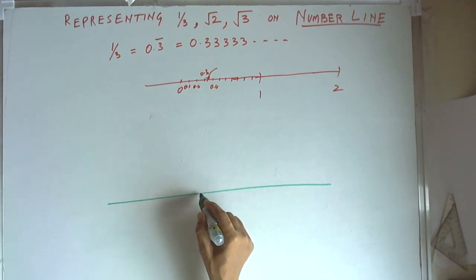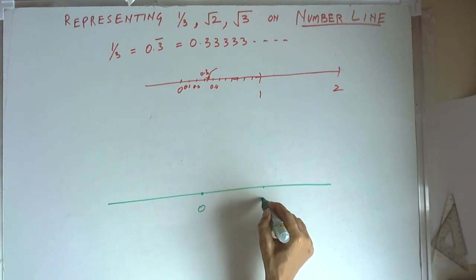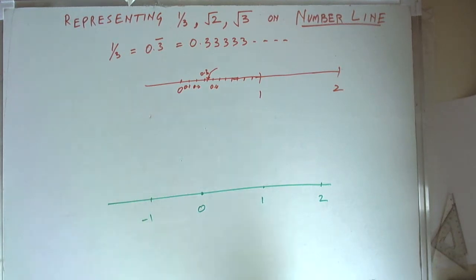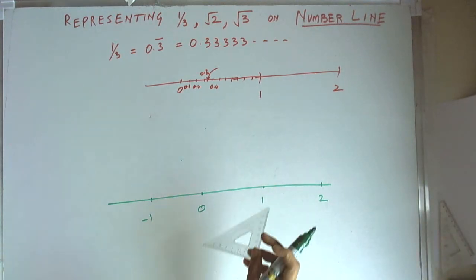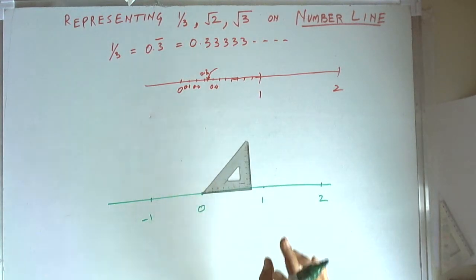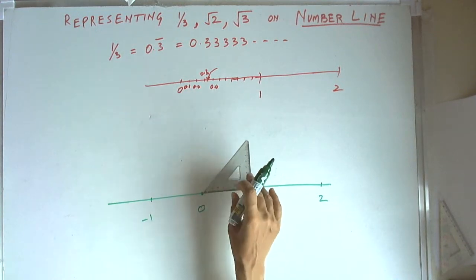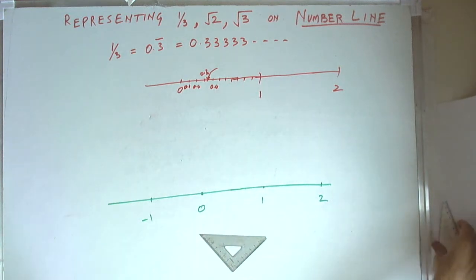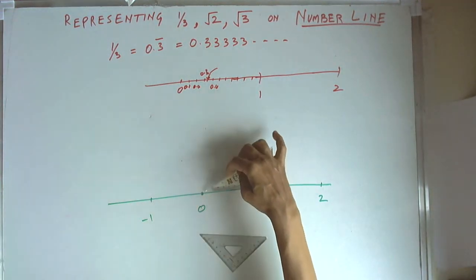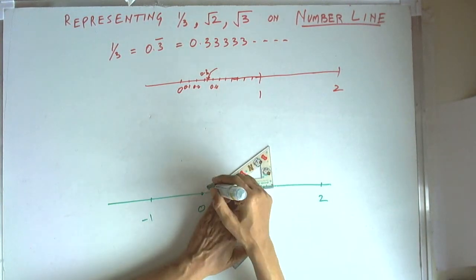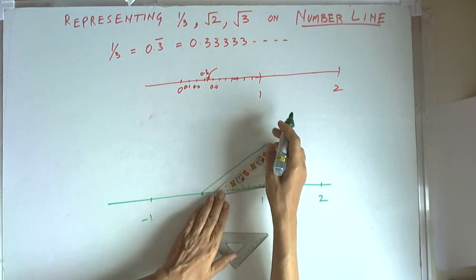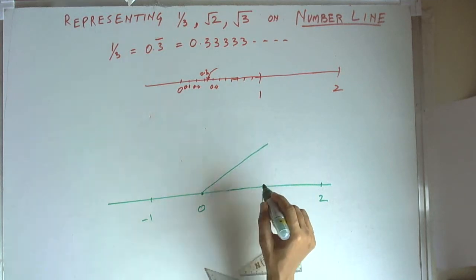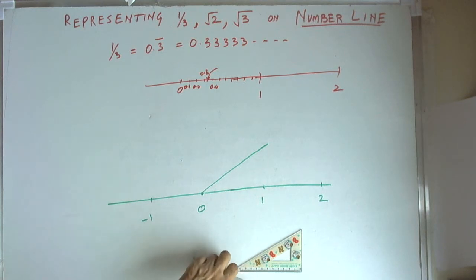We draw the number line with 0, 1, and -1 marked. After that, we draw another line at some angle to the number line — either 45 degrees, 30 degrees, or whatever angle we want. I will use two set squares needed for the construction. If you want to draw an angle of 30 degrees, we can draw it like this. Because it is 1/3, we will draw this line to a scale which is easy to divide into 3 parts.